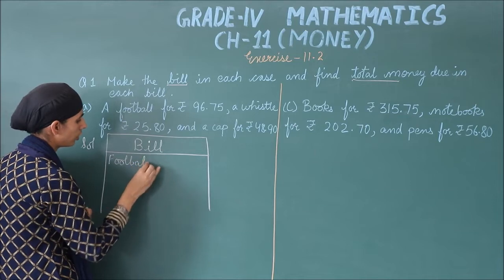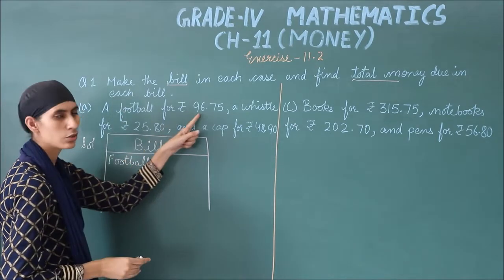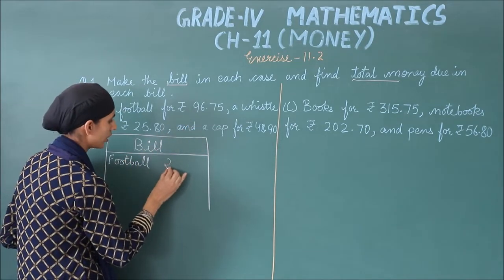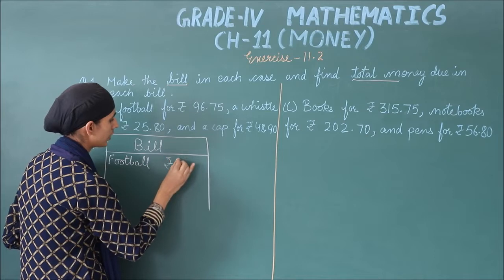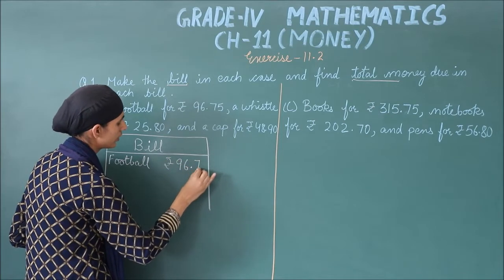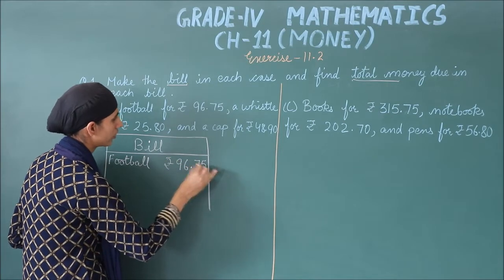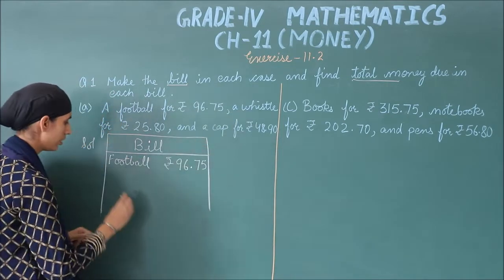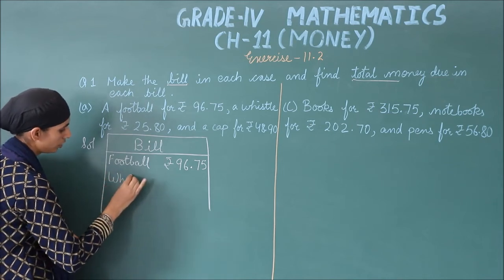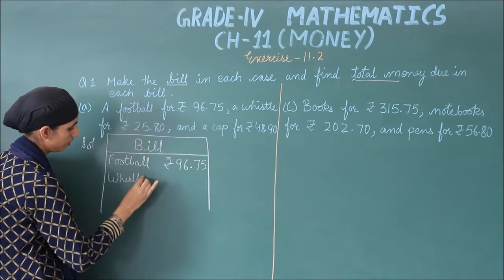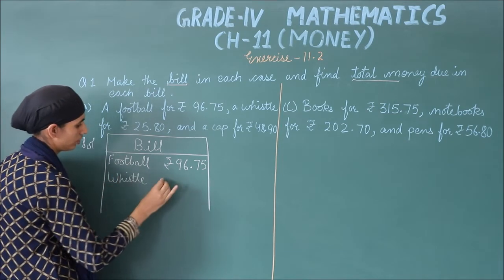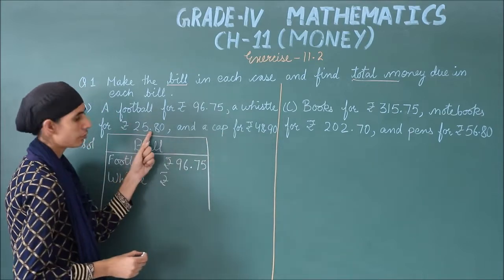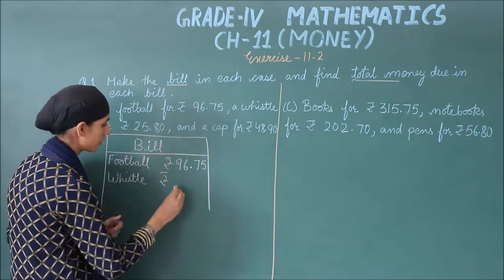The first item you have to buy is a football, so you will write the name: Football, for ₹96.75. Next, what do you want? Whistle — write Whistle for ₹25.80.